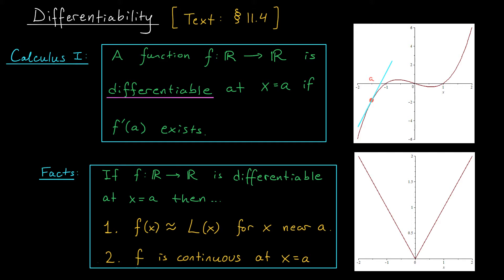Suppose now that we have a function from Math 207, a function with multiple inputs. What should it mean for this function to be differentiable at some point (a, b)? Well, if the definition before was that the derivative existed, maybe a good definition in our course is that the partial derivatives exist. Would it mean that we get the same nice consequences from Calc 1? Could our function be nicely approximated by a tangent plane near the point (a, b)? Does it mean that our function is continuous at (a, b)? Remarkably, the answer to both of these questions is no.